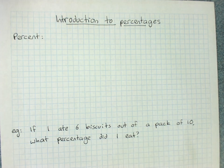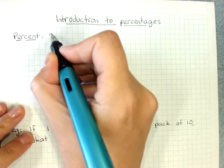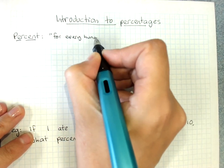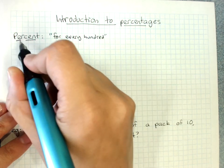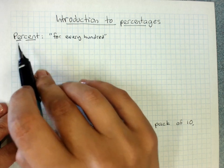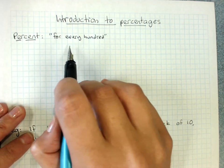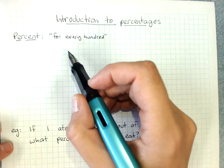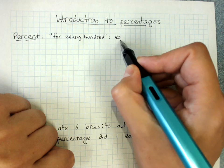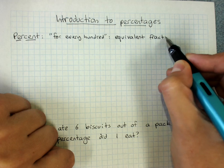Reduction to percentages. Per cent means for every hundred. 'Per', like when I say I will bring five lollies per student — that means five lollies for every student. And 'cent', like century, means a hundred. So any percentage is actually just an equivalent fraction out of a hundred.